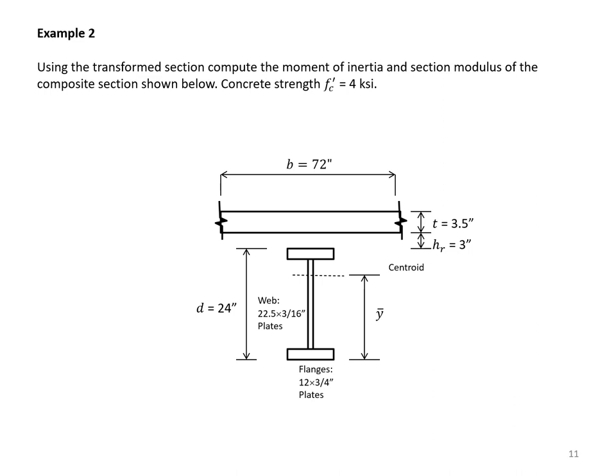In Example 2, we form the transform section for a composite section with b equal to 72. Concrete is 3.5 inches thick with f-prime-c equal to 4 ksi. The steel system is not a standard W section but is made of plates: the bottom and top flanges are plates 12 by 3/4 inch, and the web is a plate 22.5 by 3/16 inch — a very slender web.